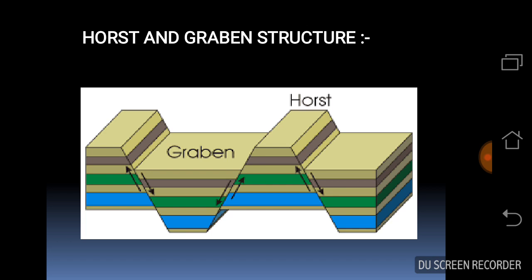A horst is a relatively uplifted block bounded by two conjugate normal faults. Together, alternating uplifted and down-dropped fault blocks are called horst and graben structure.